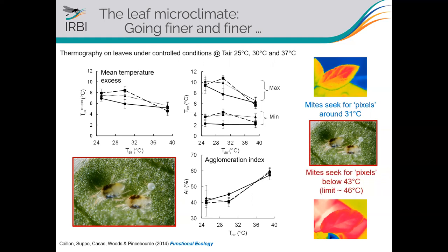We did the same for spider mites, which are much more mobile. We found that spider mites do move when around their optimal developmental conditions — approximately 31°C — using the within-leaf heterogeneity to reach optimum temperature. However, contrary to expectations, this heterogeneity does not help them survive extreme temperatures. Under warming, the air temperature induces a homogenization of the leaf surface temperature, for reasons not yet entirely clear to us.